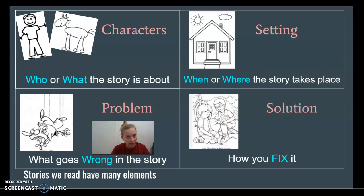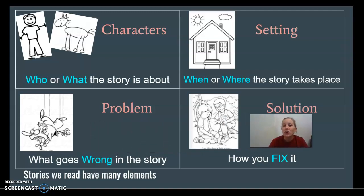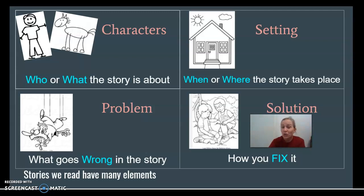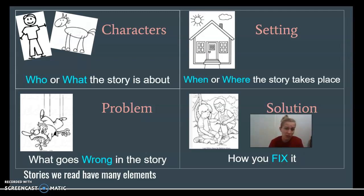Our final story element is the solution. The solution is how we fix it. In The Little Red Hen, she fixed her problem by saying, 'Sorry friends, you don't get to eat it — I will eat it by myself.' The author was able to teach us that you need to help your friends and work hard, or you don't get the reward and the fun part at the end. Our authors help us build understanding through the problem and the solution.